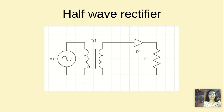Now let's see what happens in the positive cycle. When this terminal is positive and this is negative, this positive terminal makes the diode D1 to be in forward bias. When a diode is in forward bias, it allows the current to pass through it. That means when current passes through diode D1, we get an output voltage in R1.